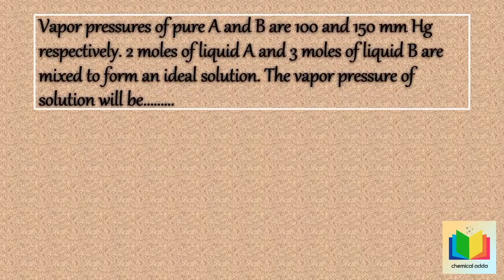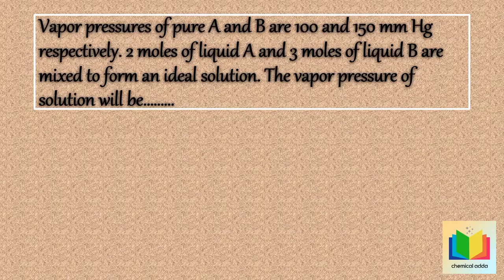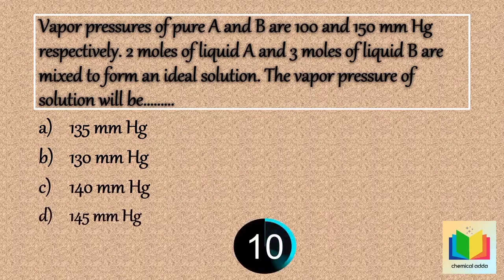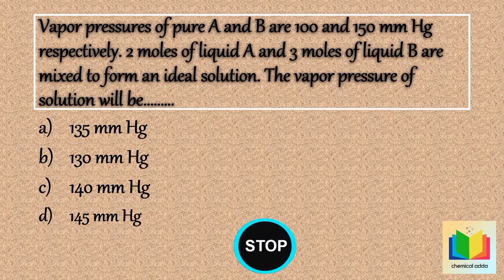Next question: The vapor pressures of pure liquids A and B are 100 and 150 mmHg respectively. 2 moles of liquid A and 3 moles of liquid B are mixed to form an ideal solution. The vapor pressure of the solution will be — option A: 135 mmHg, option B: 130 mmHg, option C: 140 mmHg, option D: 145 mmHg. The answer is option B: 130 mmHg.